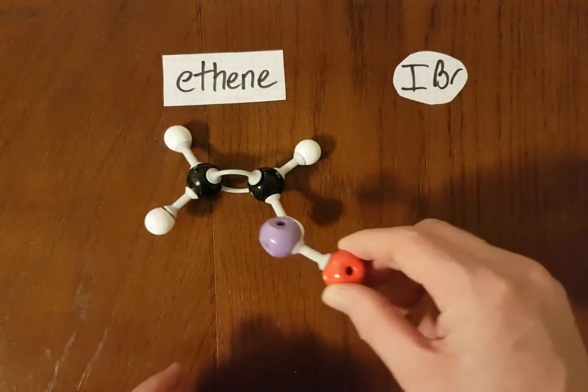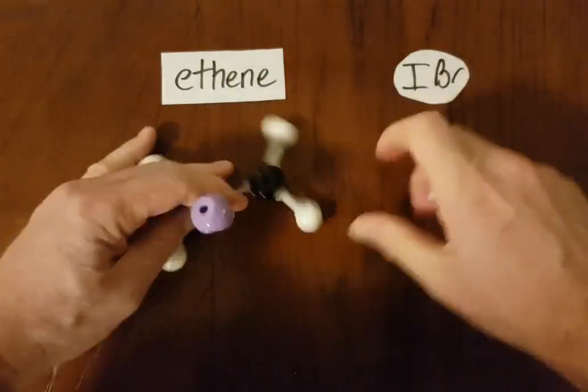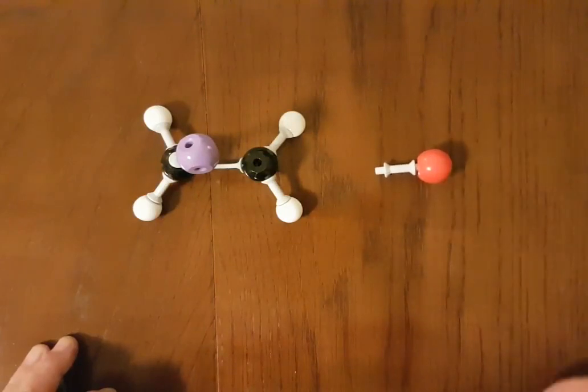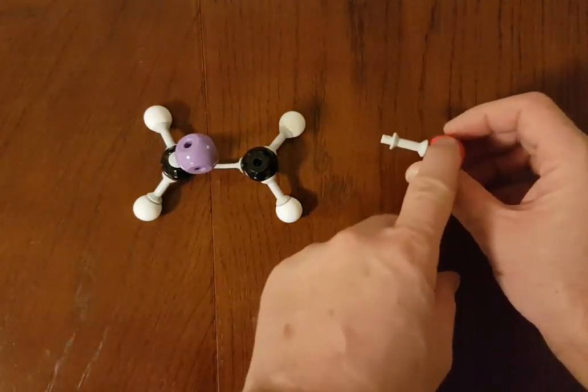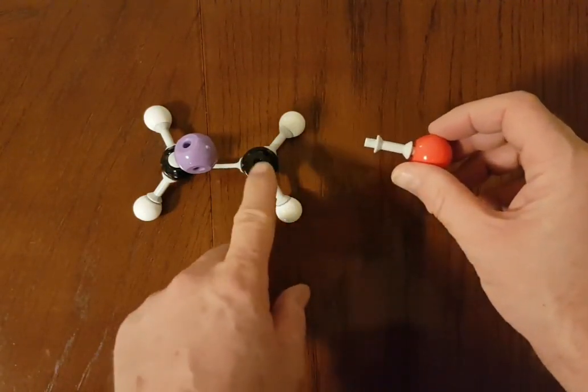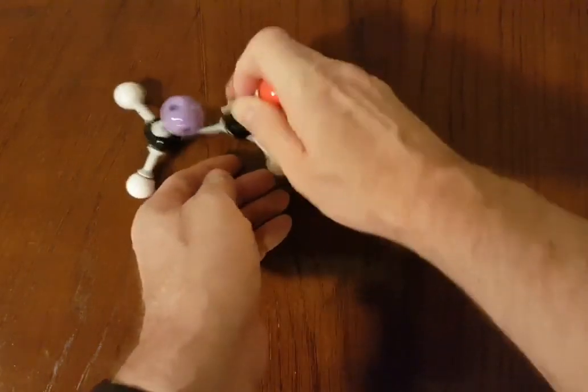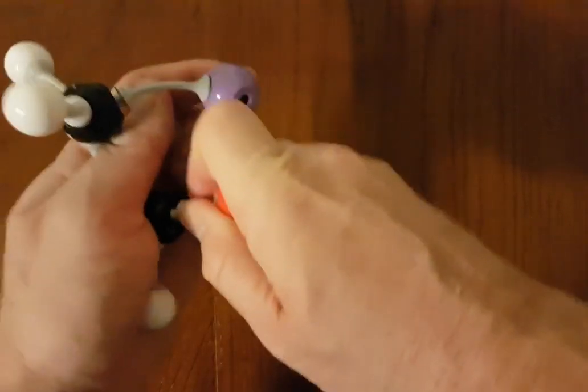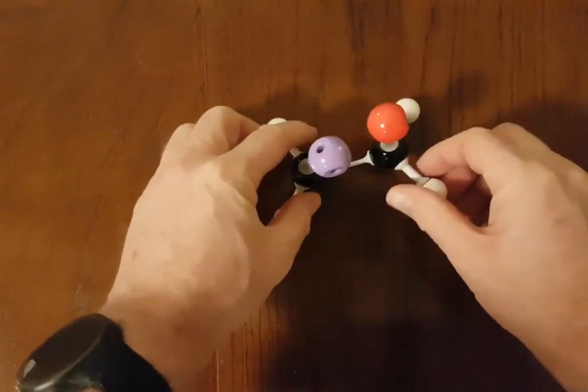And now, we've got the bromide ion, which is left. And so, this is acting like a Lewis base. It's a lone pair of electrons to be donated towards this carbocation, which is a Lewis acid.